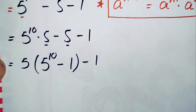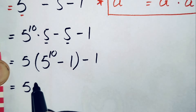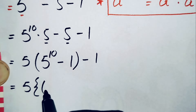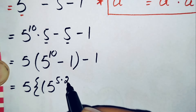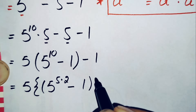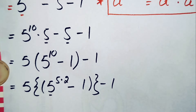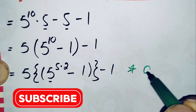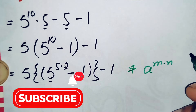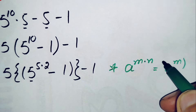Now we will factorize the power of 5 raised to 10 as 5 times 2. We will use another exponential math property: r raised to power m times n can also be written as r raised to power m, whole raised to power n. So 5 raised to power 10 becomes 5 raised to power 5, whole raised to power 2.